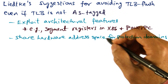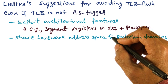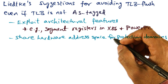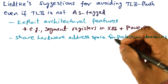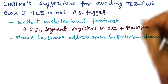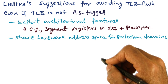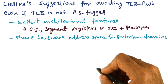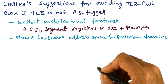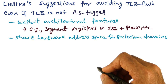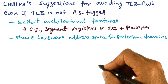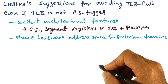Liedtke, the author of the L3 microkernel, suggests tricks for exploiting the hardware and avoiding TLB flushes, even if the TLB is not address space tagged. In particular, Liedtke's suggestion is to take advantage of whatever the architecture offers you.